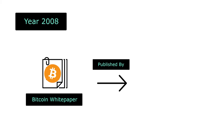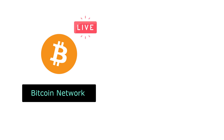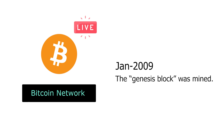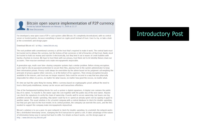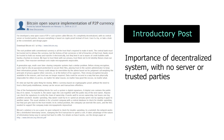On October 31, 2008, the Bitcoin white paper was published under an anonymous name, Satoshi Nakamoto. It wasn't until January 2009 that Satoshi launched the Bitcoin network and mined the first block, which is also called the Genesis block. Satoshi publicly announced the Bitcoin project through the P2P Foundation forum, emphasizing the importance of having a decentralized and trustless monetary system.